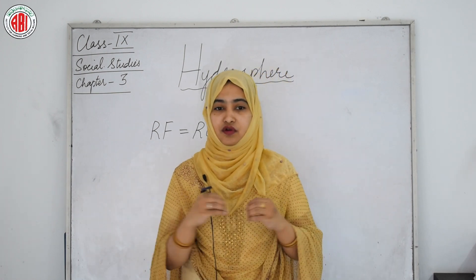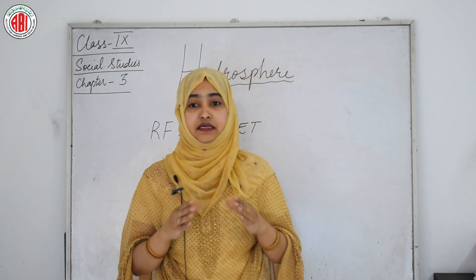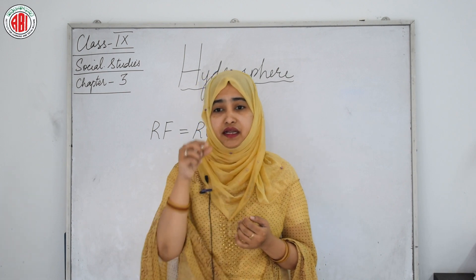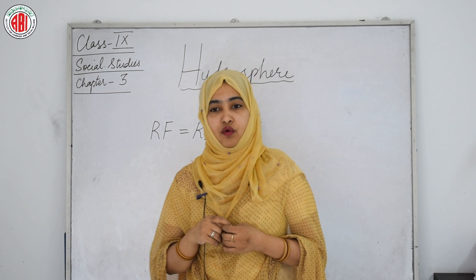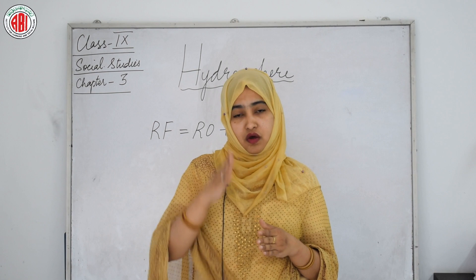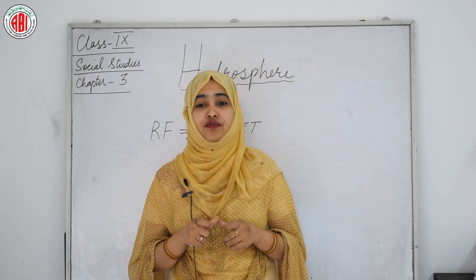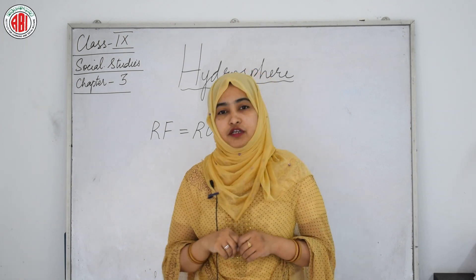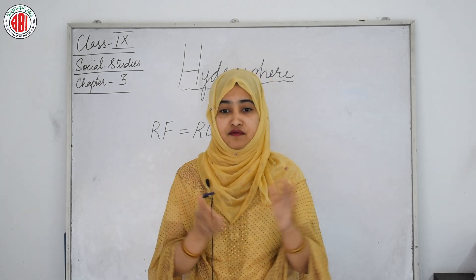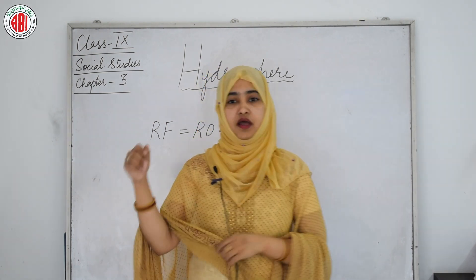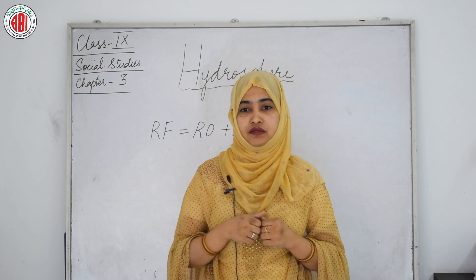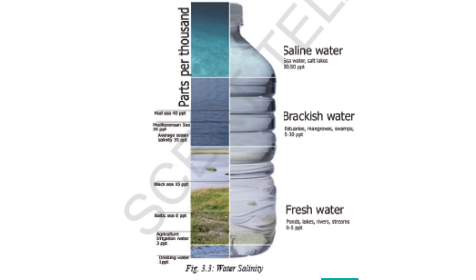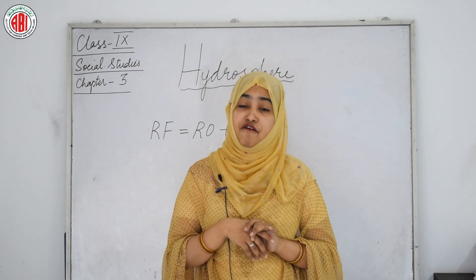Salinity is the term used to define the total content of dissolved salt in sea water. It is calculated as the amount of salt in grams dissolved in one thousand grams of sea water, and is usually expressed as parts per thousand (ppt). The average salinity of the ocean is 35 ppt — that is, 35 parts of salt in a thousand parts of water. Of all the dissolved minerals in sea water, sodium chloride (common salt) alone constitutes 77.8 percent.